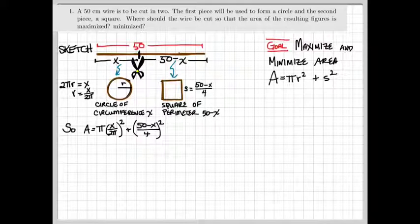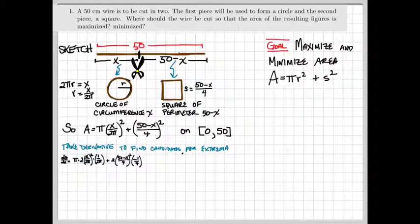So our natural closed interval on which we are trying to maximize and minimize this function is on 0 to 50. Now we can go ahead and take the derivative of A with respect to x to find the candidates for our extreme points.